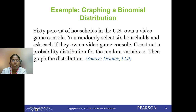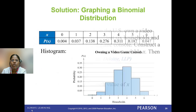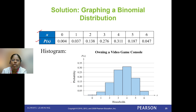For graphing a binomial distribution: after you have the X and P(X) values, plot X on the x-axis and the corresponding probability on the y-axis. If you plot these, you will get a histogram.